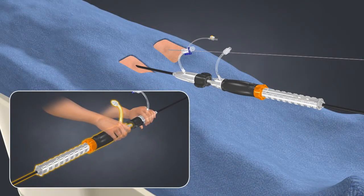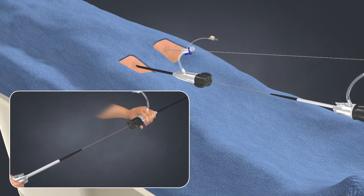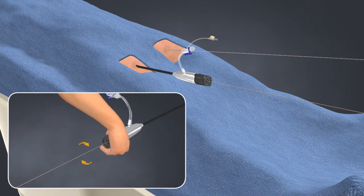Release the extension delivery system and then remove. Upon removal, tighten the hemostasis valve.